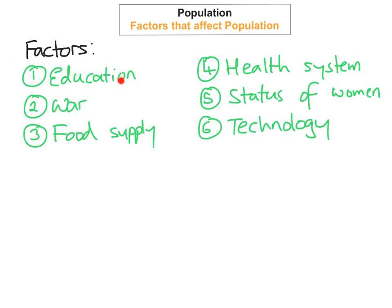The first one is education — so depending on how educated the country is, it will affect the population. The third one is food supply. The fourth one is the health system within the country. The fifth one is the status of women, and the last one is technology.